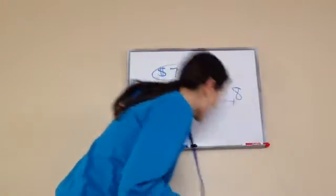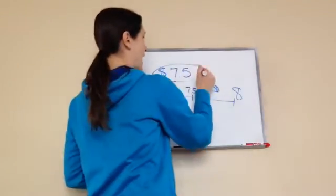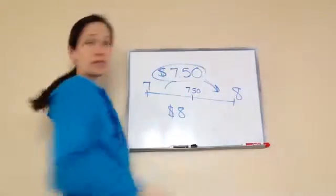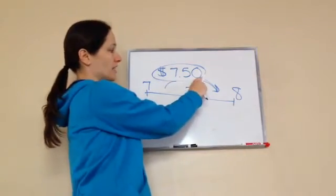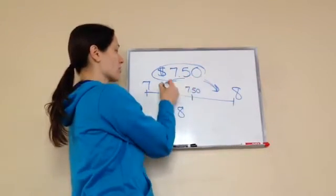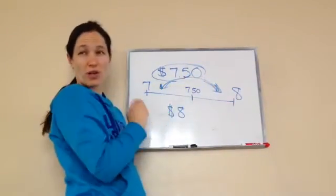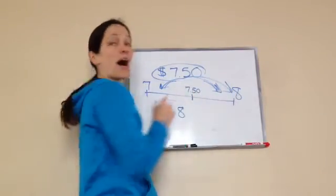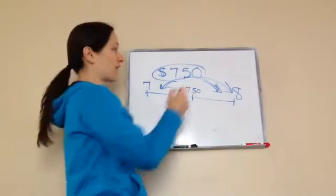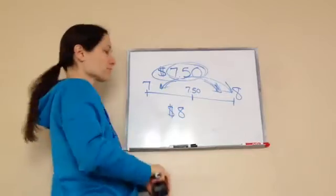Let's look at another one. If I asked you: is seven dollars and 50 cents closer to seven or closer to eight? You always go to the higher number if it's exactly halfway. So it goes to eight. Just a review on that one.